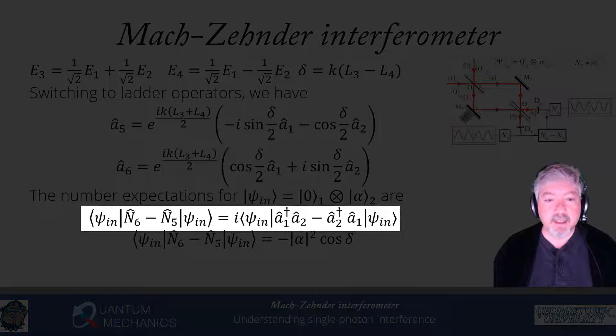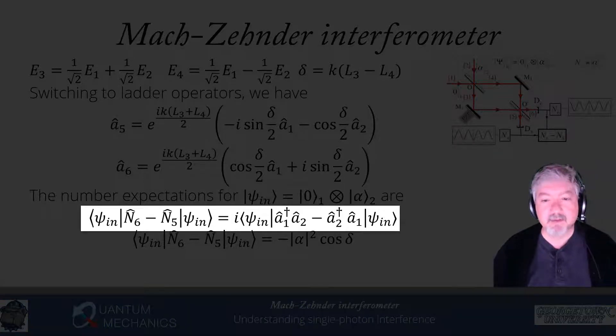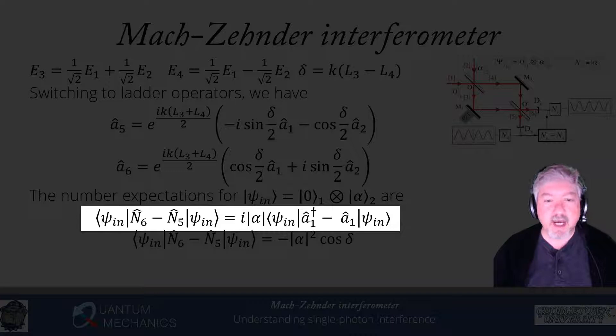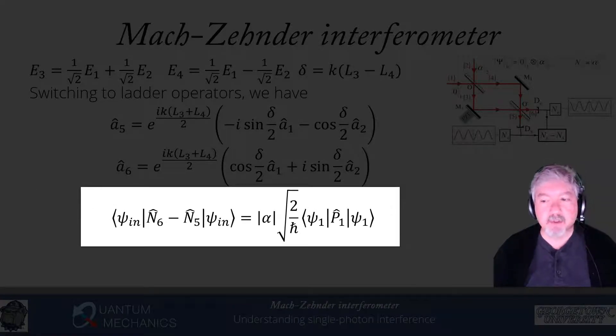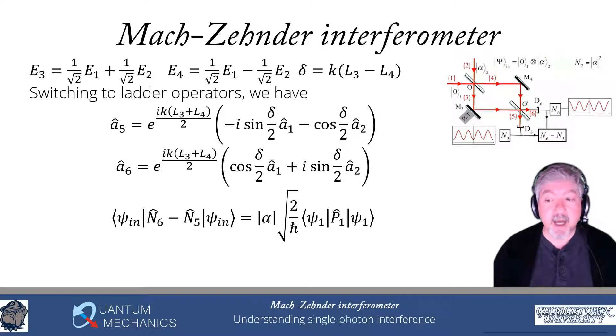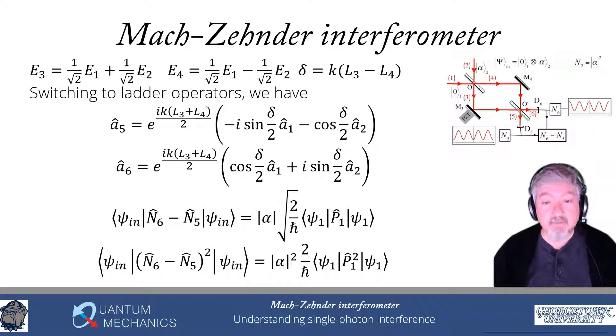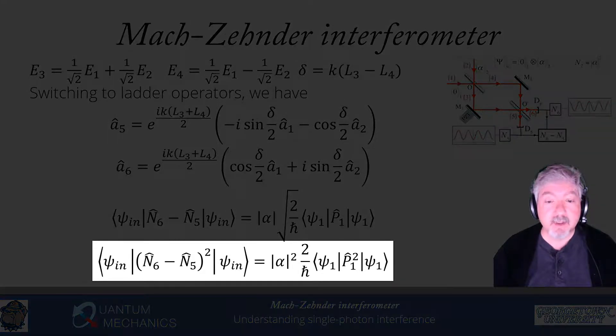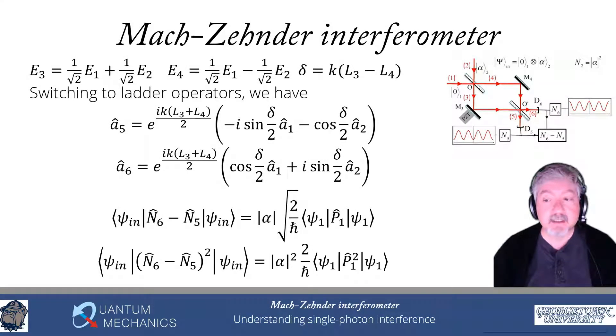If I re-express that difference, those operators, n6 minus n5, in terms of the fundamental operators, I find that that difference is proportional to the cross terms. So it's A1 dagger A2 minus A2 dagger A1. I can evaluate that operator, and assuming that the phase on that state coming in on port 2 is equal to zero, we just replace that by the modulus of alpha. You see then we have an i times an A1 dagger minus an A1. We go back and look at our definition of the quadrature operators, and we see that that's actually proportional to the P quadrature operator. We can then go through a much longer calculation to calculate the expectation value of n6 minus n5 quantity squared. It's actually a rather long calculation, even though the final result ends up being relatively simple: modulus of alpha squared 2 over h bar expectation value of the square of the quadrature in the state that is incident on port 1.